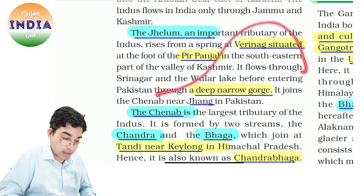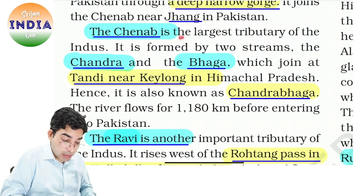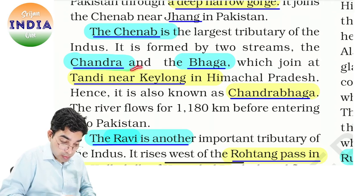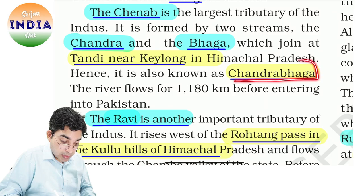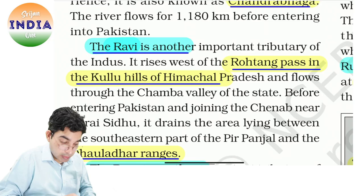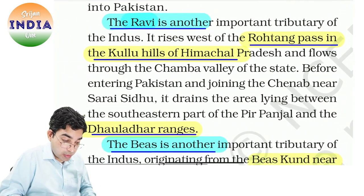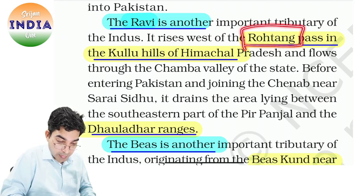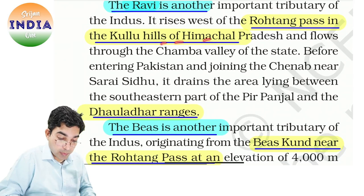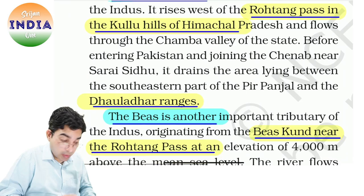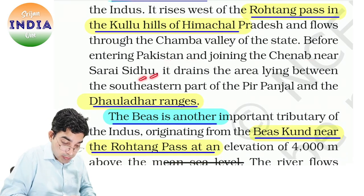Jhelum river — Verinag se nikli, Pir Panjal gorge banaya, Wular Lake banaya, meander bhi karegi aur Jhang in Pakistan mein Indus mein mil jayegi. Main river Indus hai aur ye saari rivers usme tribute dengi. Chenab is the largest tributary of Indus — ye do streams se banti hai: Chandra aur Bhaga — ye Tandi mein milti hain — Keylong in Himachal Pradesh — tab ye banti hai Chandrabhaga. 1,180 kilometers ki hai, aur ye bhi Pakistan jaati hai. Ravi doosri river hai jo tributary hai Indus ki — ye Rohtang Pass se banti hai.